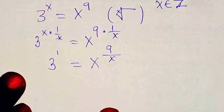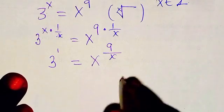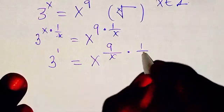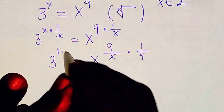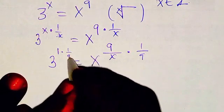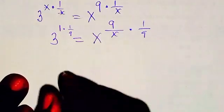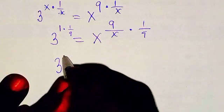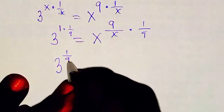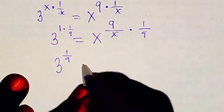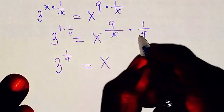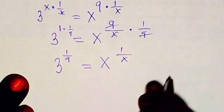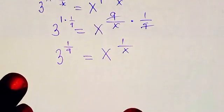From here, I can multiply both sides by 1 over 9. So this is going to be 3 to the power of 1 over 9 equals x to the power of 1 over x, because the 9 in the exponent gives us 1 over x.